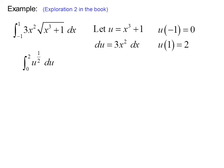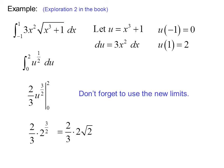So my integral is the integral from 0 to 2 of u to the 1 half du. Or 2 thirds u to the 3 halves evaluated from 0 to 2. Which is 2 thirds u to the 3 halves. Or 2 thirds times 2 radical 2. Or 4 radical 2 over 3.